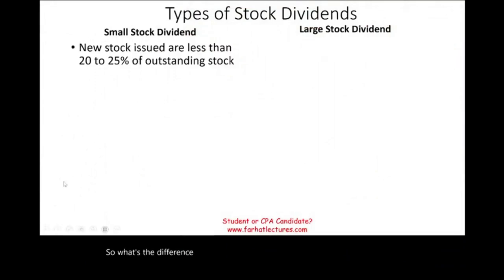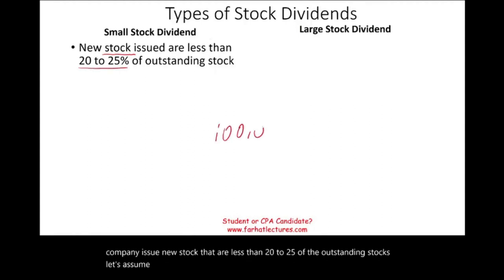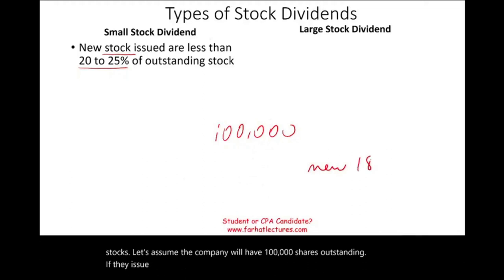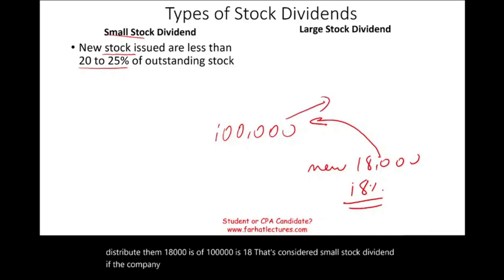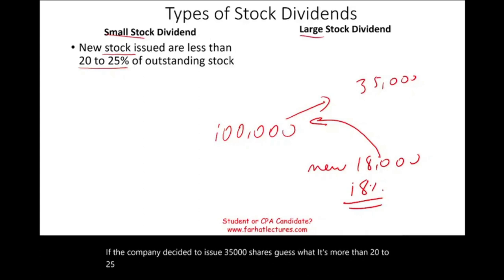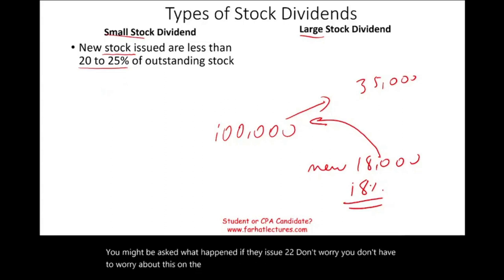A small stock dividend is when the company issues new stock that is less than 20 to 25% of the outstanding shares. For example, if there are 100,000 shares outstanding and the company issues 18,000 new shares, that's 18% — considered a small stock dividend. If they issue 35,000 shares, that's more than 20 to 25%, making it a large stock dividend. On the CPA exam or in your accounting course, you won't need to worry about borderline cases like exactly 22%.